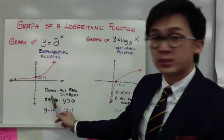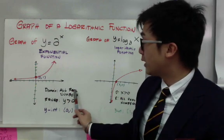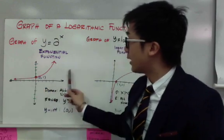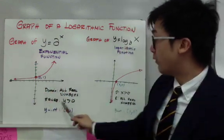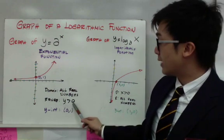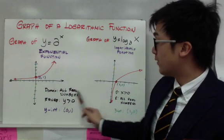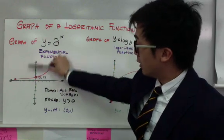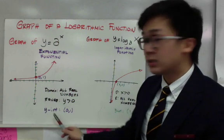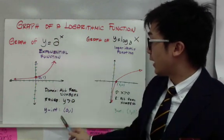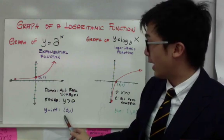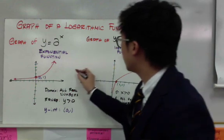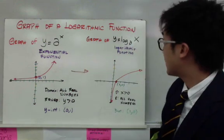For the exponential function, the domain will be all real numbers because the graph of the exponential function covers all numbers along the x-axis. However, for the range, it's just y greater than 0, or all positive values of y, because the graph only covers your positive y-axis. Your y-intercept is not changing for y equals a to the x — it will always be at (0, 1). Now, to its inverse, which is the logarithmic function, they are simply related.